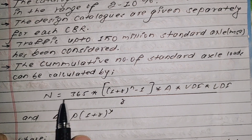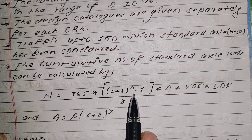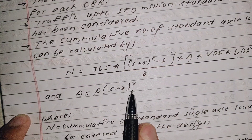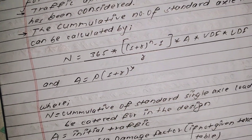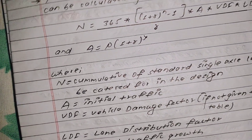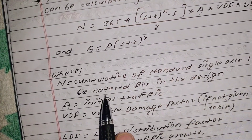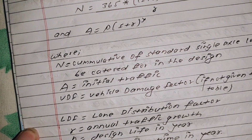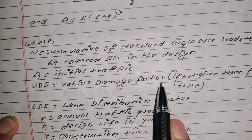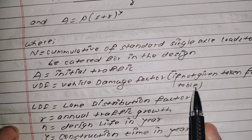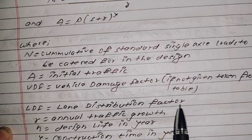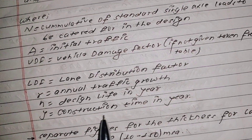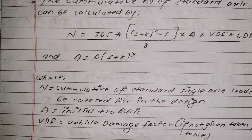The formula is: N = 365 × [(1 + r)^n − 1] / r × A × VDF × LDF, where A is the initial traffic in the year of construction, VDF is the vehicle damage factor (taken from table if not given), LDF is the lane distribution factor, r is the annual traffic growth rate, n is the design life in years, and y is the construction time in years.